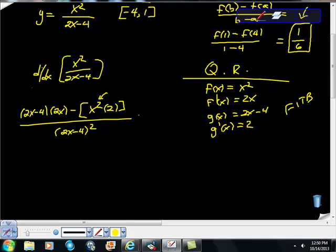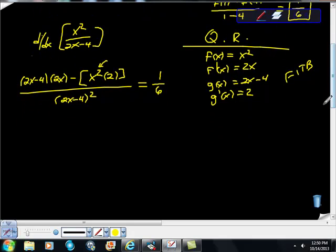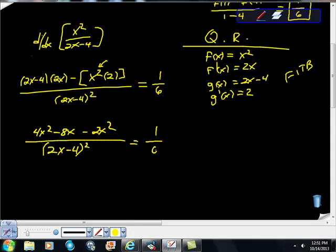And what sucks about that is that here's our derivative, and we've found a guarantee that we're going to find a slope of 1 sixth somewhere in there. So I'm going to clean this up, and I'm going to end up getting 4x squared minus 8x minus 2x squared all over 2x minus 4 quantity squared equals 1 sixth.